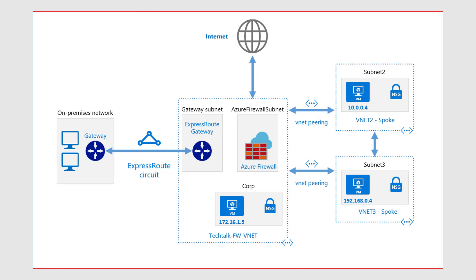Now let's have a look at this lab environment and see how we can configure Azure Firewall. In this example I have a hub and spoke topology, which means I have a primary VNet where Azure Firewall is deployed, and I have two other spoke VNets where I have a couple of virtual machines. I'll show you how to configure rules to allow communication between two different VMs sitting in two different VNets.